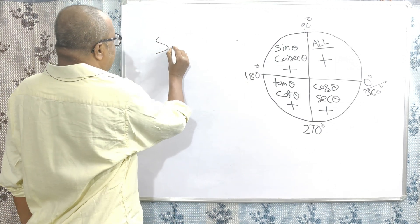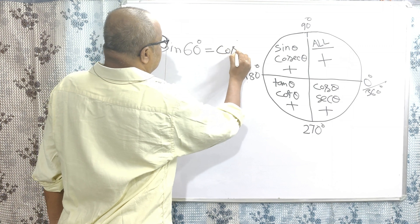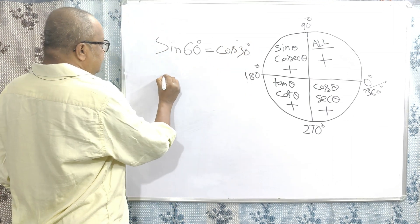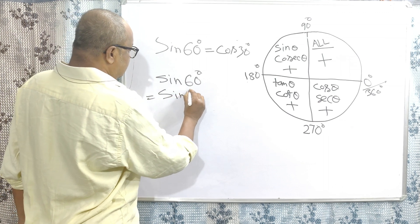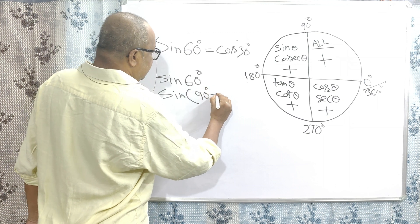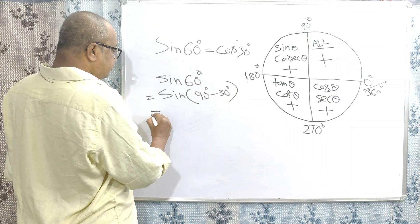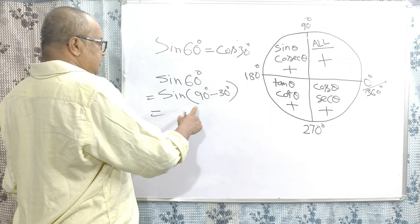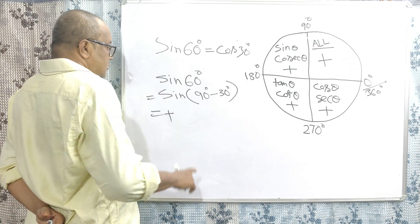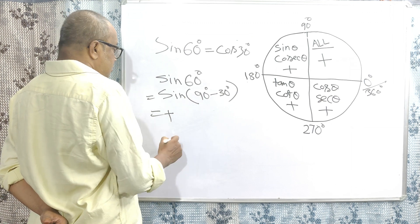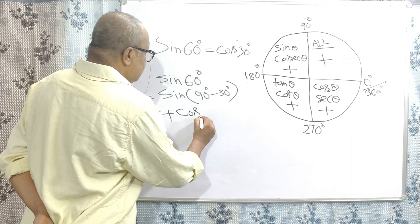Sin 60 degrees can be written as sin of 90 degrees minus 30 degrees. This angle falls in the first quarter, so the positive sign applies. Since before 90 the multiple is 1, which is an odd number, it is converted to cos, and the angle is 30 degrees. So sin 60 degrees is equal to cos 30 degrees.